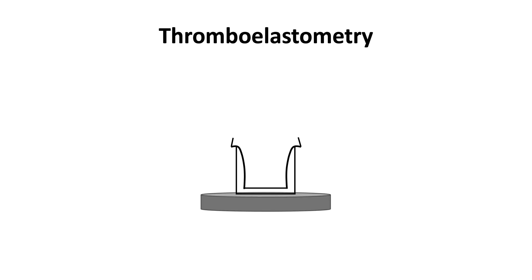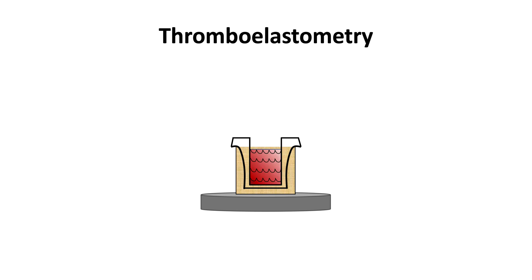The thromboelastometry device consists of a platform with a chamber, heating element, and a disposable cup filled with citrated whole blood. The blood sample is placed in the chamber, and a detection pin is inserted into its center. In Rotem, the pin oscillates, not the cup. As blood clots, the pin's movement is recorded through a detector as a function of time.